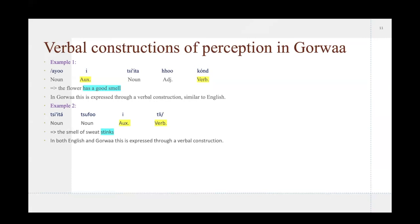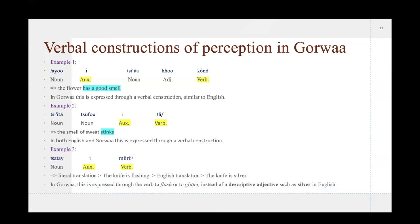Example two, we have tzi ita tsu fo i kli. The smell of sweat stinks. In both English and Gorwaa this is also expressed through a verbal construction, so in this case there are quite a few similarities. And the third example, however, we have tzatai y miriya. The literal translation of this is the knife is flashing, although what I had asked for during the elicitation was the knife is silver. In Gorwaa, if something is silver, it's expressed through to flash, to glitter, or to sparkle, instead of the descriptive adjective that is silver in English.